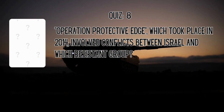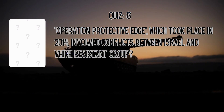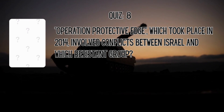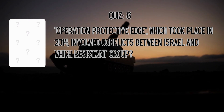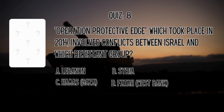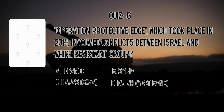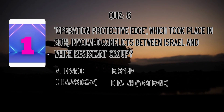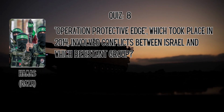Operation Protective Edge, which took place in 2014, involved conflicts between Israel and which resistant group? Is it A. Lebanon, B. Syria, C. Hamas, or D. Fatah? The correct answer is Hamas.